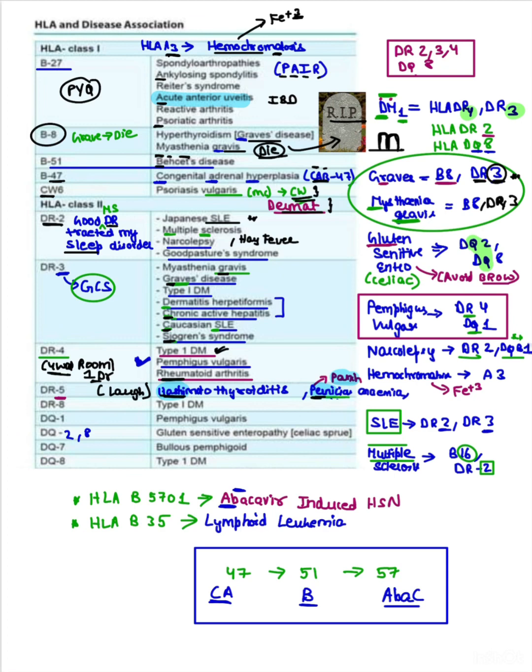The important thing is DQ2 and DQ8. This is basically gluten-sensitive enteropathy, celiac disease, where we avoid four things: barley, rye, oat, and wheat. This is associated with dermatitis herpetiformis where treatment of choice is dapsone. You need to avoid four things and this you need to glue in your mind.